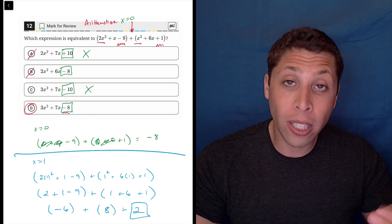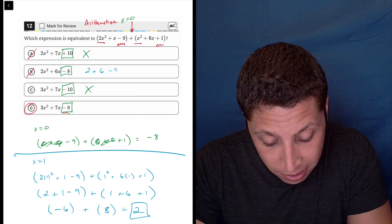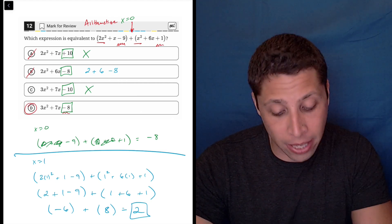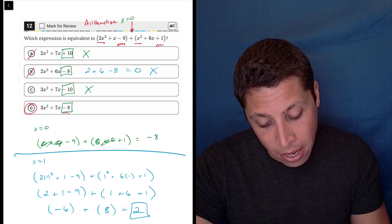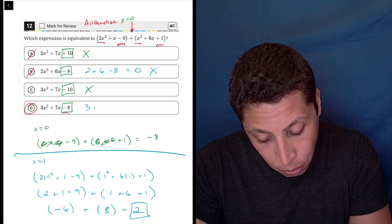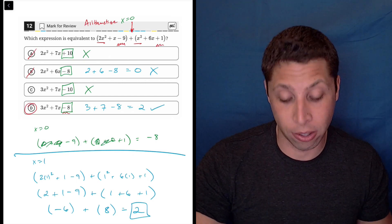And now all I need to do is check choices b and d and see how they play out. So this would be 2 plus 6 minus 8, that's 8 minus 8 is 0. So that's not 2, not what I wanted. But if I do the same thing to d, 3 plus 7 minus 8, 10 minus 8 is 2. And that would prove the answer.